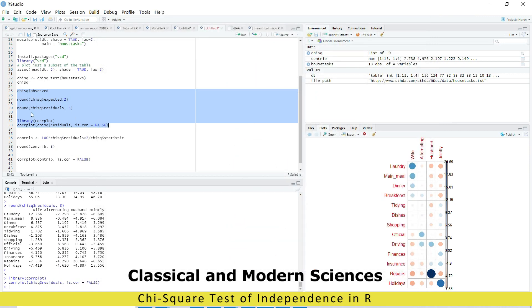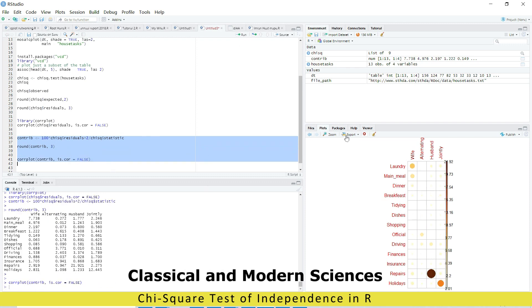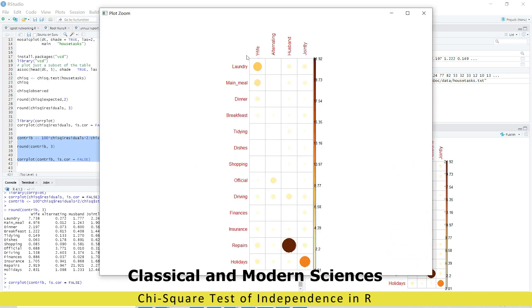So we will convert this data to percentage and make their correlation plot. So now you can see their correlation is also joint, is positively correlated, and husband work in repair of household things, and wife work in laundry.